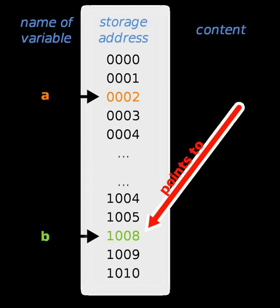The basic syntax to define a pointer in C declares PTR as the identifier of an object of type: pointer that points to an object of type int — this is usually stated more succinctly as PTR is a pointer to int. Because the C language does not specify an implicit initialization for objects of automatic storage duration, care should often be taken to ensure that the address to which PTR points is valid. This is why it is sometimes suggested that a pointer be explicitly initialized to the null pointer value, which is traditionally specified in C with the standardized macro NULL.